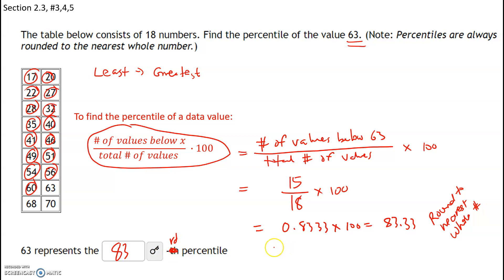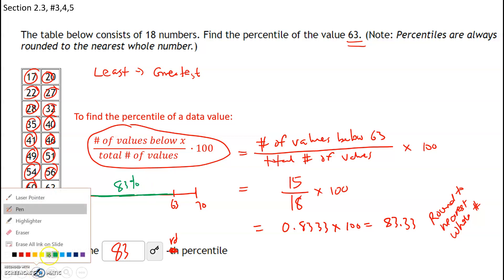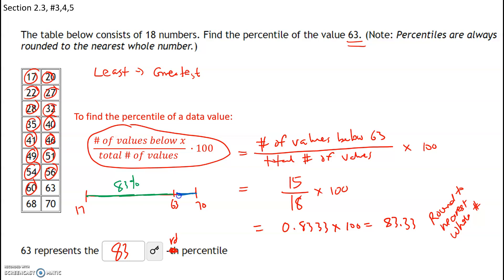Now what does that mean? If I take all the values here and list them from least to greatest — our smallest value is 17, our largest value is 70, and 63 is going to be about there. 63 represents the 83rd percentile. What that means is that 83 percent of values are going to be below 63, and 100 minus 83 is 17, so 17 percent of values will be above 63. 63 serves as a cutoff point for the bottom 83rd percentile from the top 17.